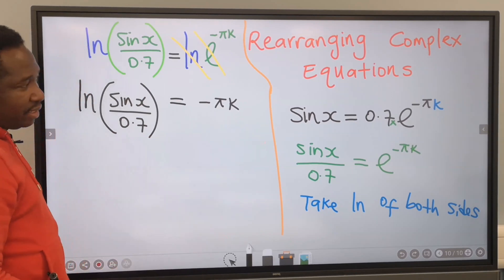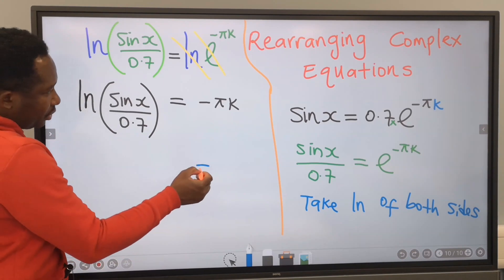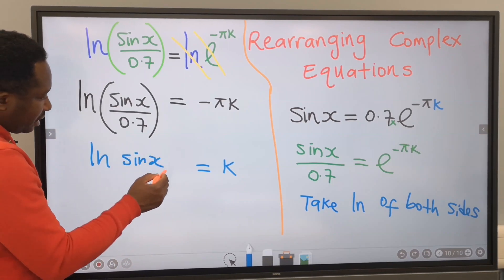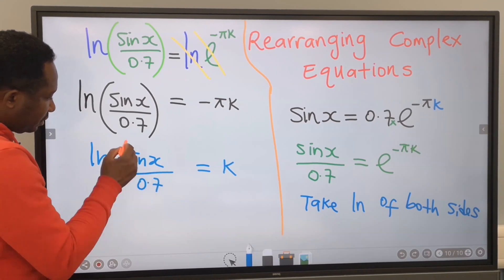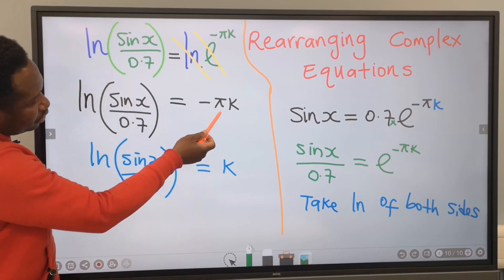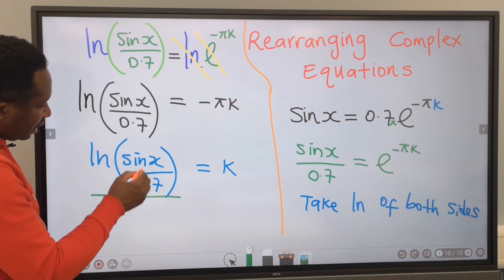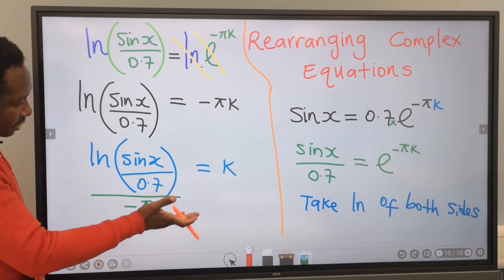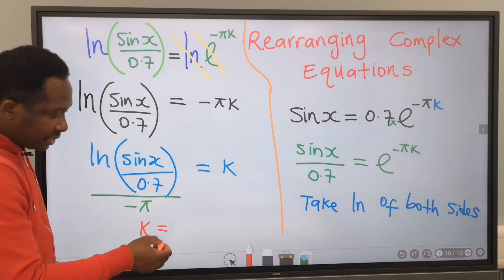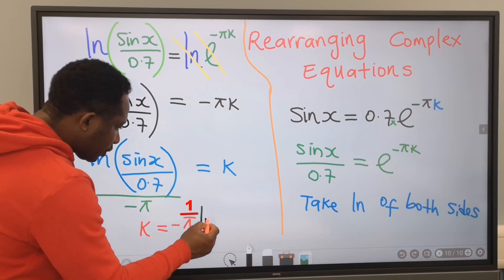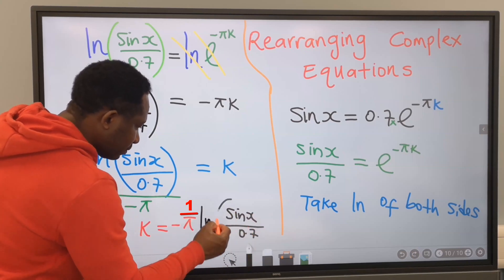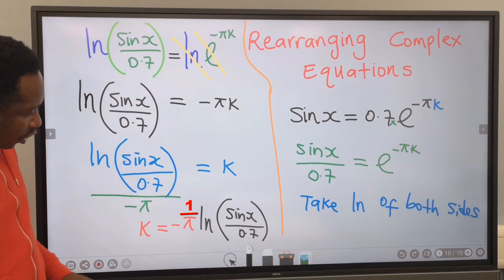I need just k on this side. So k equals the natural log of sin x over 0.7, all divided by minus pi — because minus pi was multiplying, it moves across and divides. k is now isolated. This is our answer: k equals the natural log of sin x over 0.7, divided by minus pi.